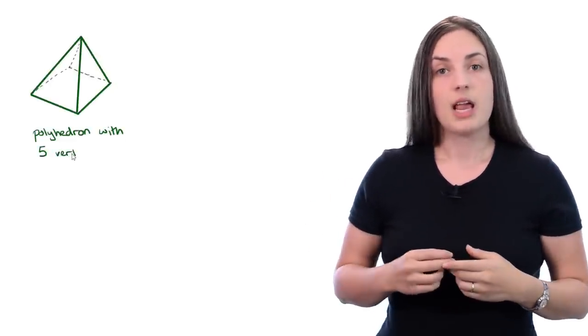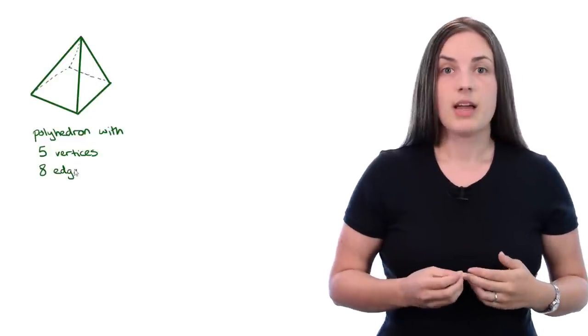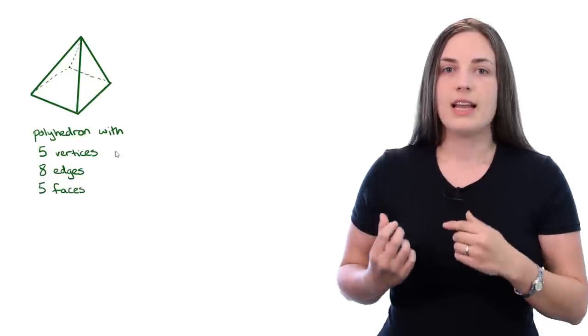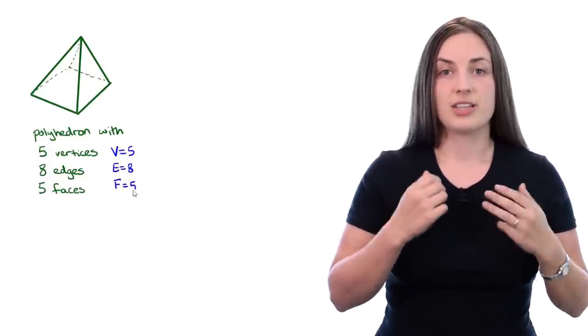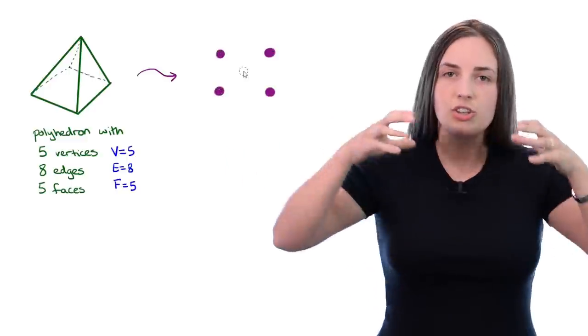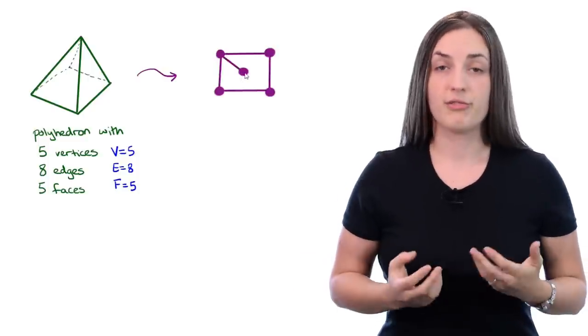Euler's formula is often talked about in the context of polyhedra. Here I'll draw a polyhedron, which happens to be a tetrahedron. It has five vertices, eight edges, and five faces. We'll write V, E, and F for the number of vertices, edges, and faces.